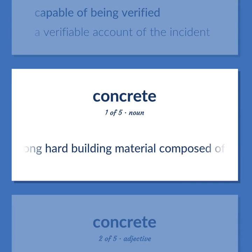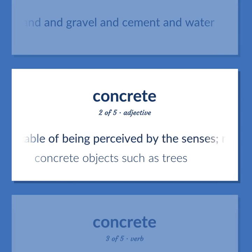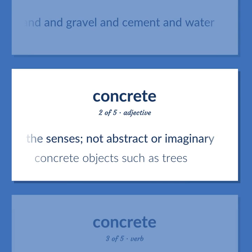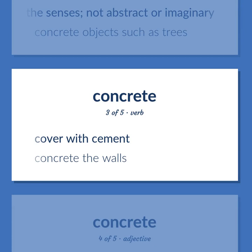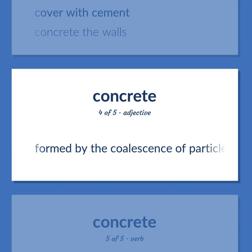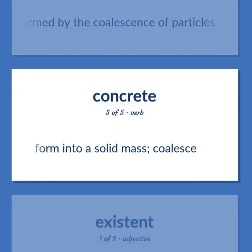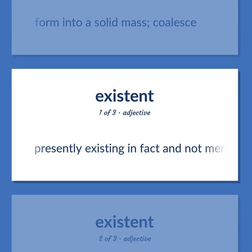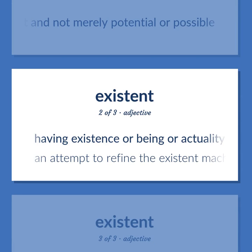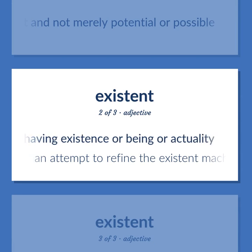Concrete: a strong, hard building material composed of sand, gravel, cement, and water. Capable of being perceived by the senses — not abstract or imaginary. Concrete objects such as trees. Cover with cement. Concrete the walls. Formed by the coalescence of particles. Form into a solid mass — coalesce. Presently existing in fact and not merely potential or possible. Having existence, being, or actuality. An attempt to refine the existent machinery to make it more efficient.